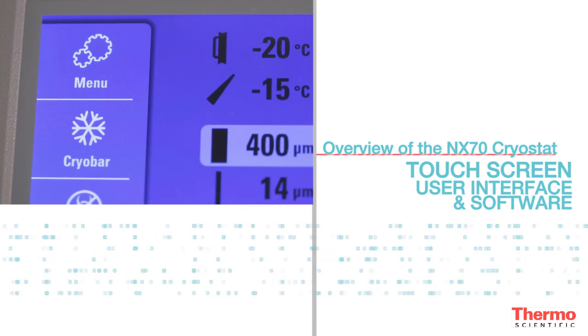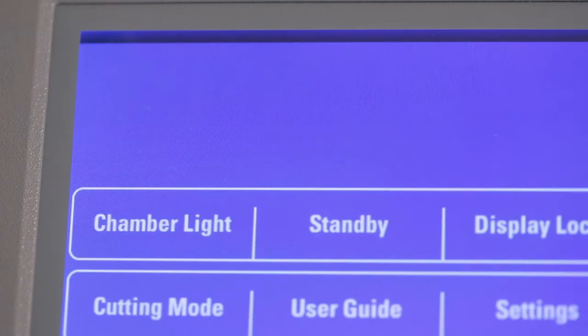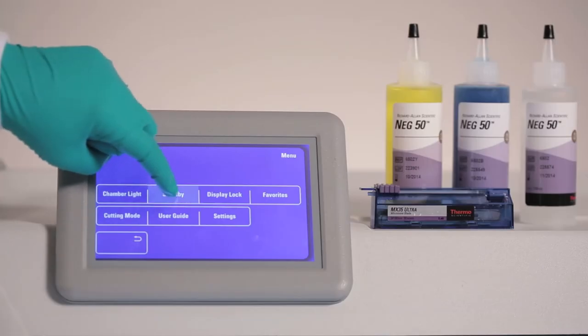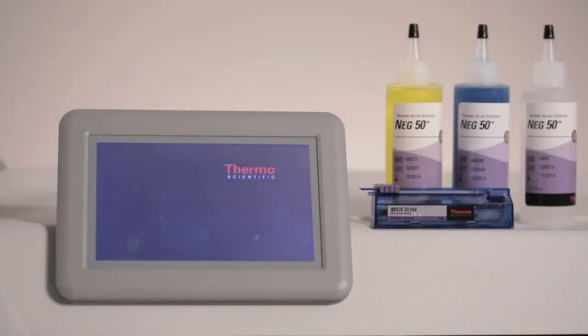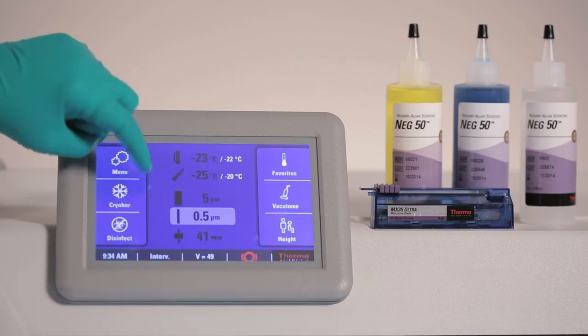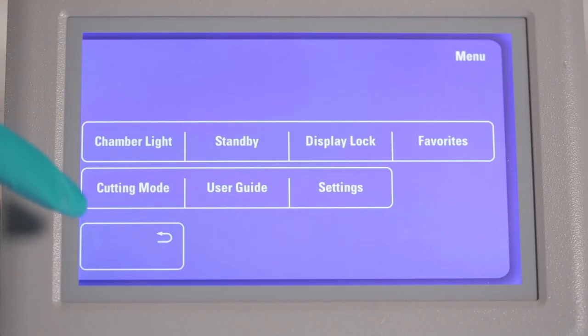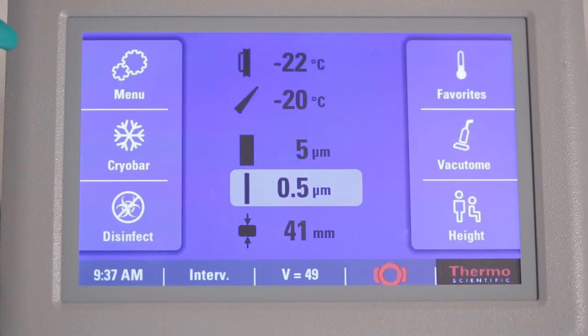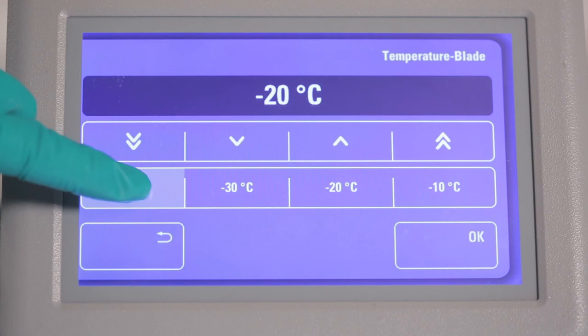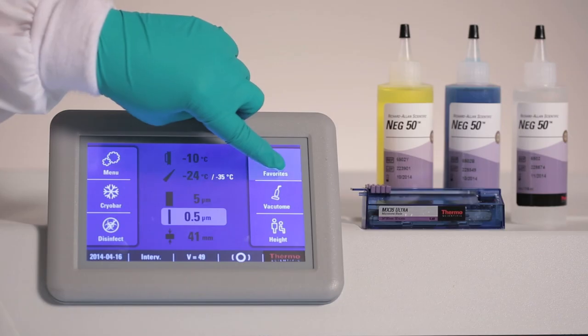The intuitive software and touch screen simplifies the user interface as the software icons guide the user through cryostat functionality and operation. This icon-driven interface enables temperature adjustment, selection of section thickness, engagement and scheduling of the disinfection cycle, vacutome operation, height adjustment, and storage of customer-defined sectioning parameters.